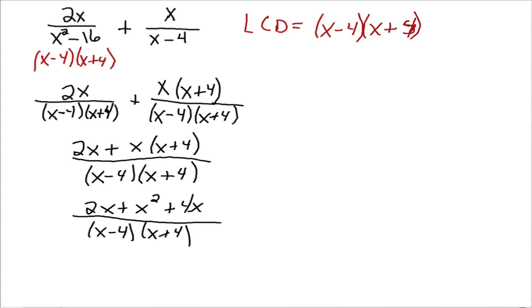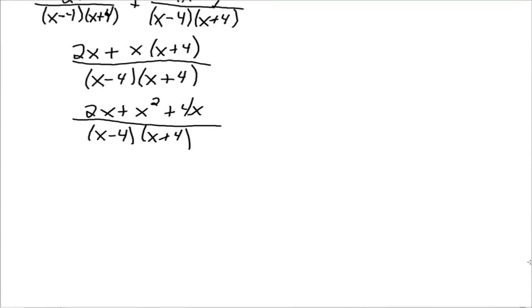All right, so now does the numerator, what does that add up to? x squared plus 6x? All right, so that goes to x squared plus 6x all over our LCD. x minus 4x plus 4.